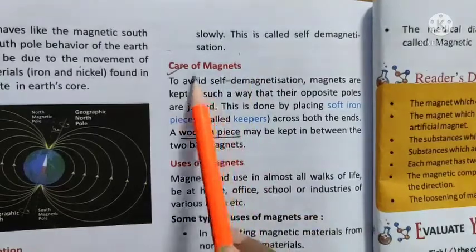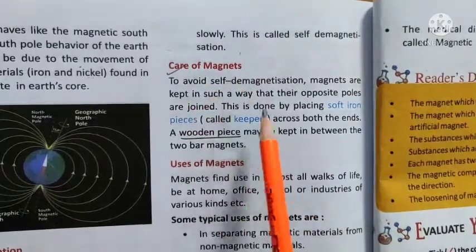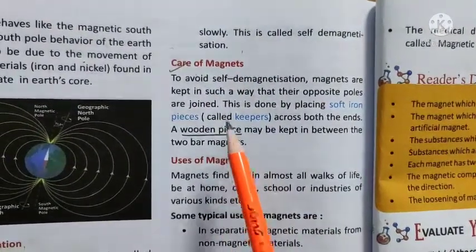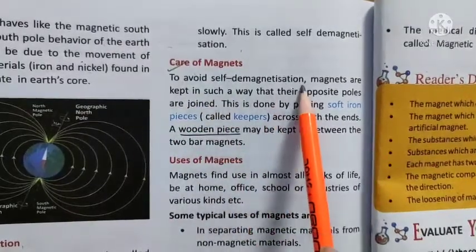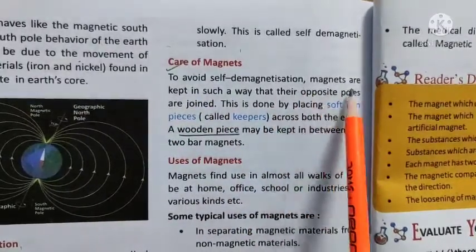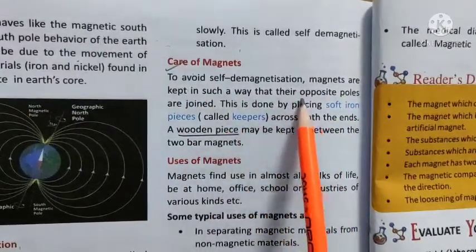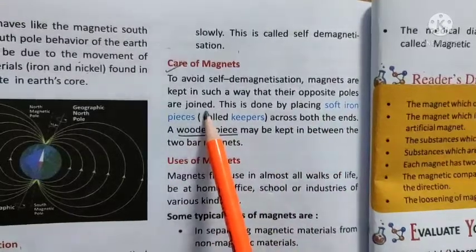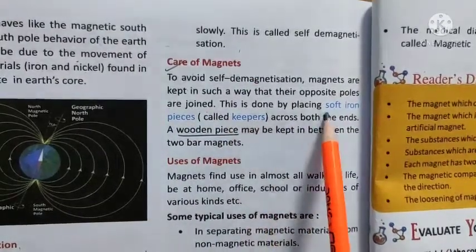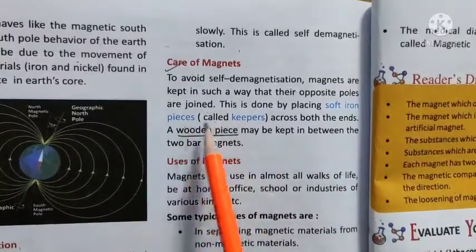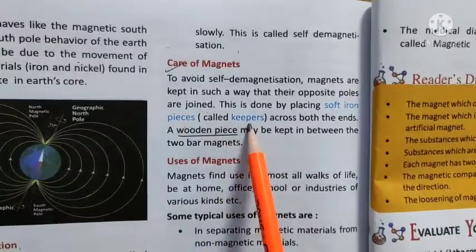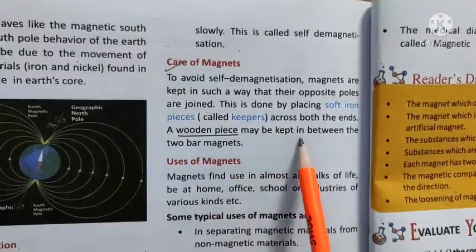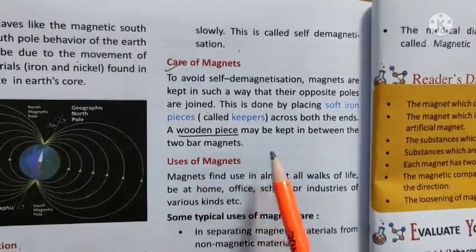Now, care of magnets — how do we keep the magnets? To avoid self-demagnetization, magnets are kept in such a way that their opposite poles are joined. This is done by placing soft iron pieces, which are called keepers, across both ends. A wooden piece may be kept in between the two bar magnets.